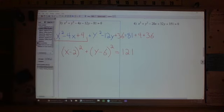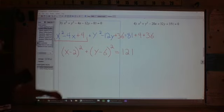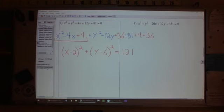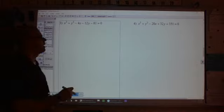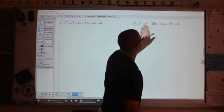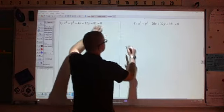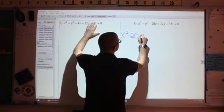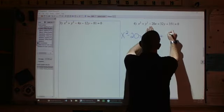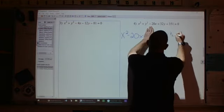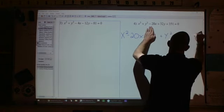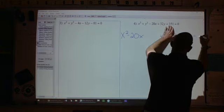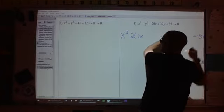So it is completing the square. I'll do it again for number 4. One more time on number 4. I'm going to break it up so I have my x's together, my y's together, move all the constant terms to the other side, so I have x squared minus 20x plus y squared plus 32y and then is equal to negative 351 for this one.